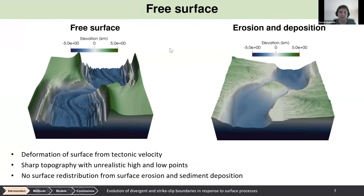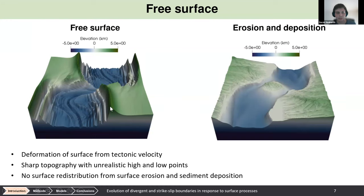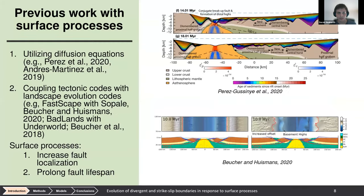An important consideration in rift models is how the surface is treated. The simplest approach is a free-slip surface, where material flows along the surface but can't be deformed by stresses. A free surface allows deformation through time, but produces unrealistically high topographies and deep valleys because nothing redistributes the surface. Including surface processes resolves this, redistributing material and affecting brittle deformation near the surface.